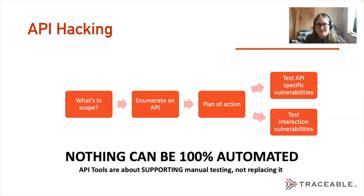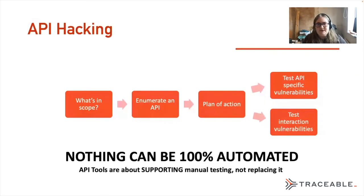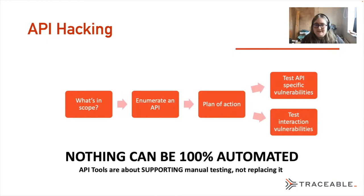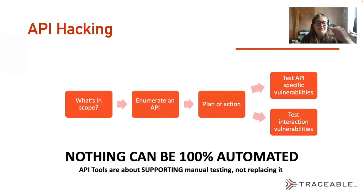This is my process, very simplified. First thing I ask is what's in scope. Scope is really important for me as an external tester, because I don't want to break the law. When you work in offensive security, keeping your customer's scope in mind is really important. It can be really tempting to say I'm going to find something no one else has found, so I have to go out of scope. Actually, you really don't have to go out of scope, and if you are, you're putting a lot of risk on yourself. So I'm always asking what's in scope — if the API isn't in scope, I don't touch it.